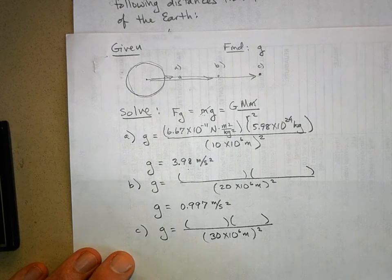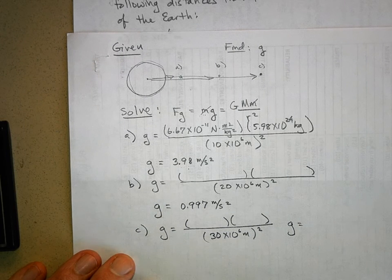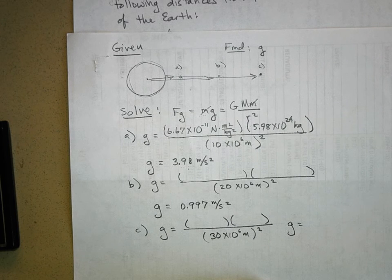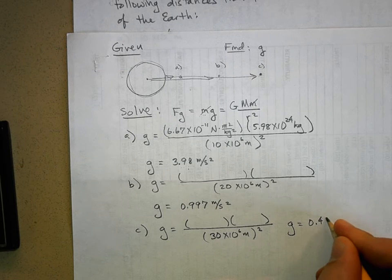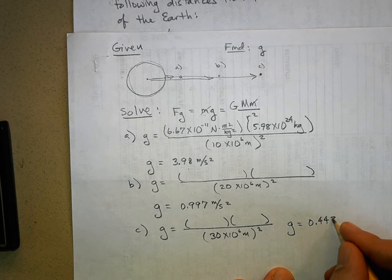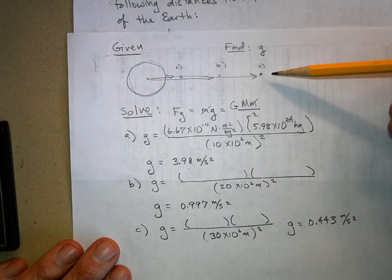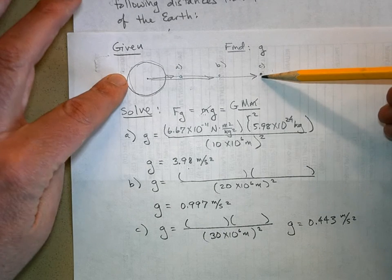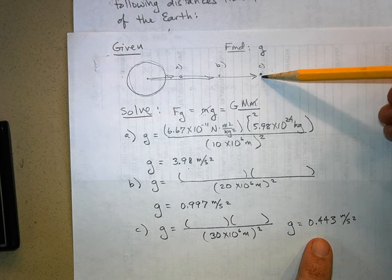What'd you get? 0.443 meters per second squared. So when you're this far away from the Earth, gravity is quite weak now, and it's getting weaker pretty fast.